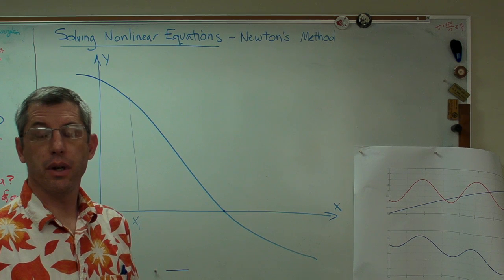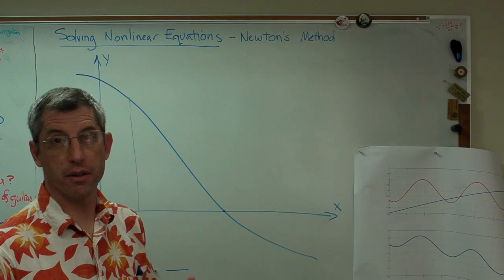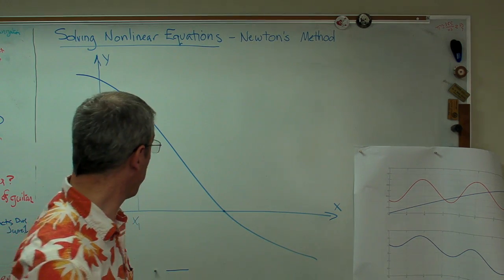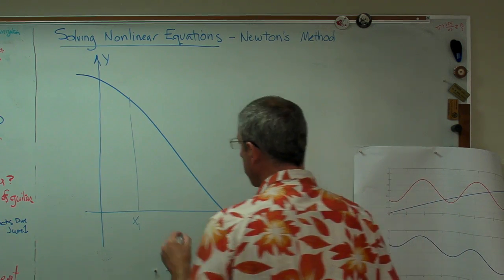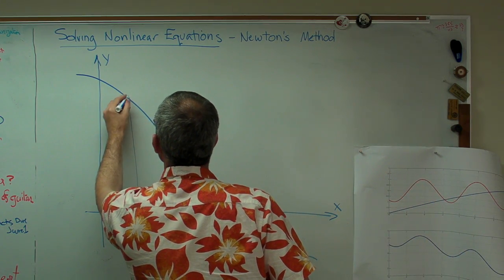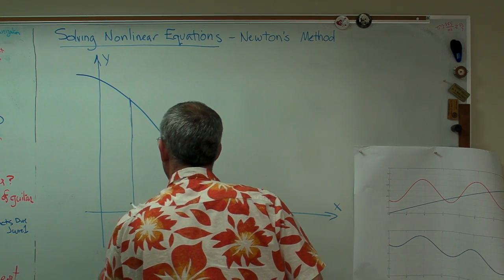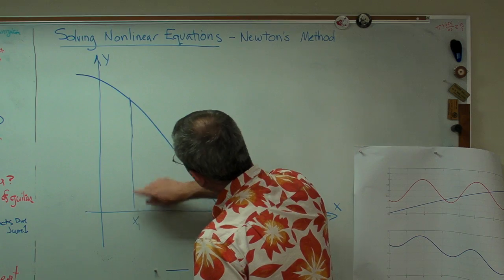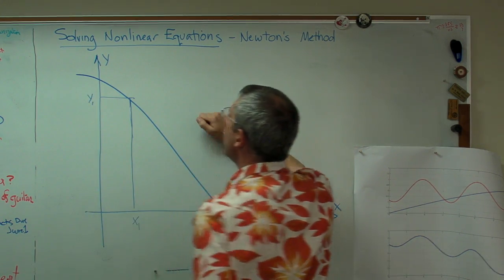Now, most numerical algorithms need an initial guess. You have to start somewhere. And usually the program isn't smart enough to be able to guess on its own where you should start. So we're going to give an initial guess here. At this point right here, which we'll call y1, we're going to do something.